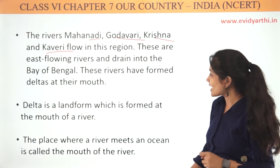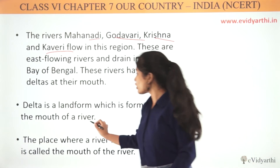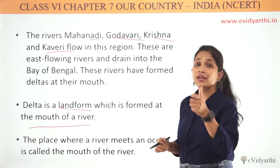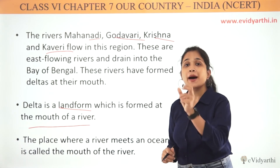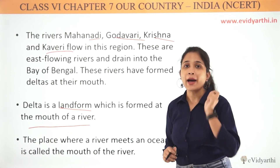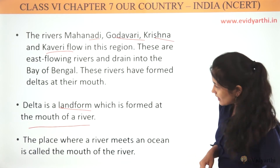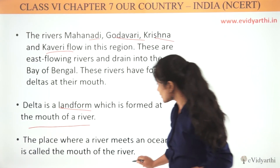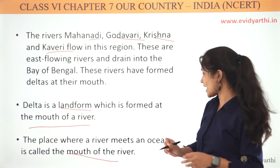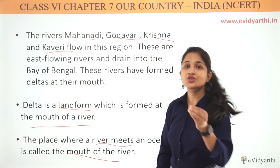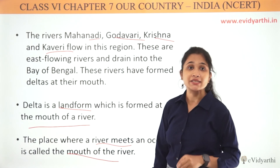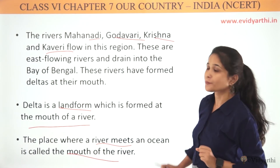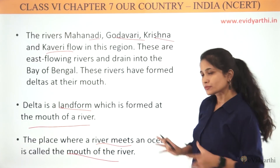A delta is a landform which is formed at the mouth of the river — that place where a river meets the ocean or the sea. We call that its mouth. So this is your coastal place.